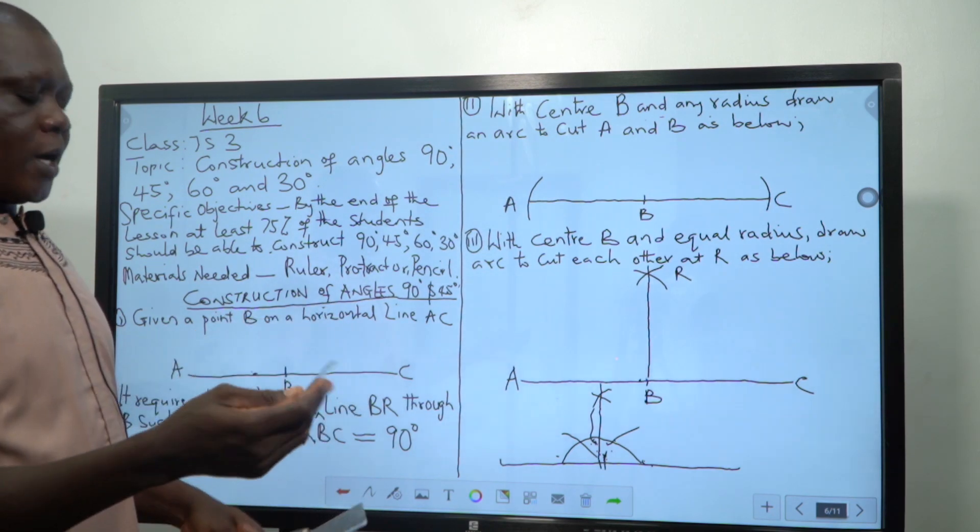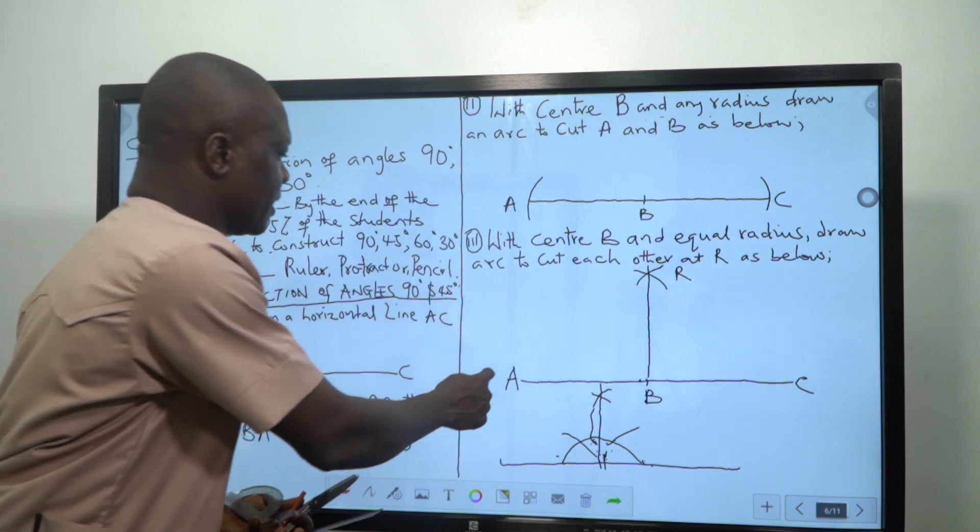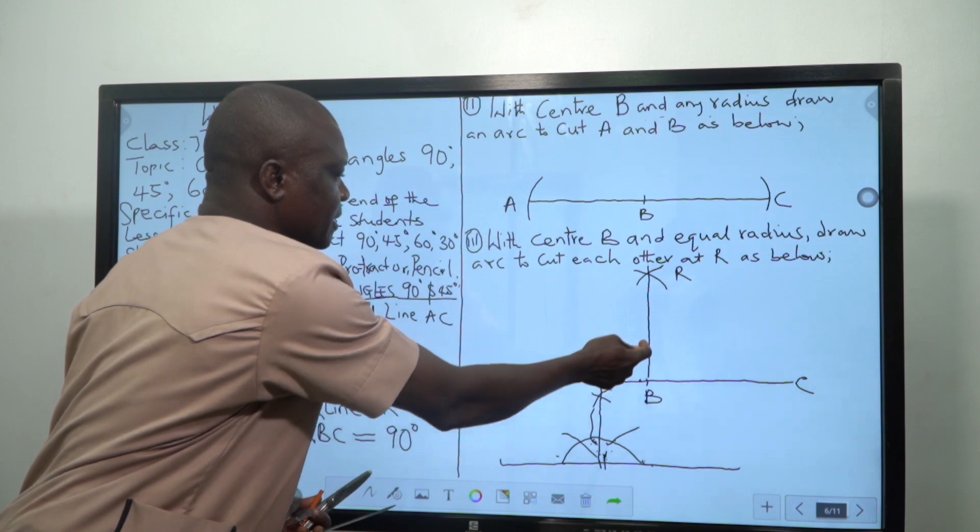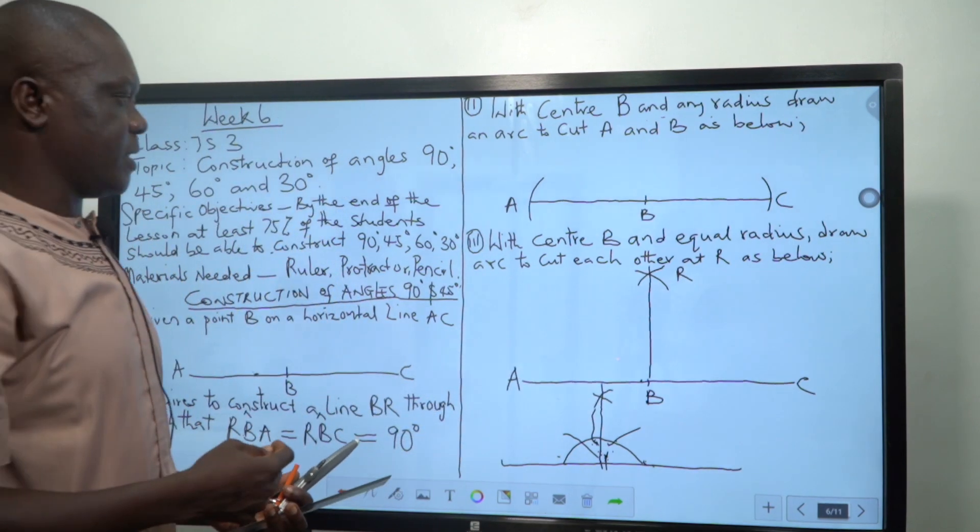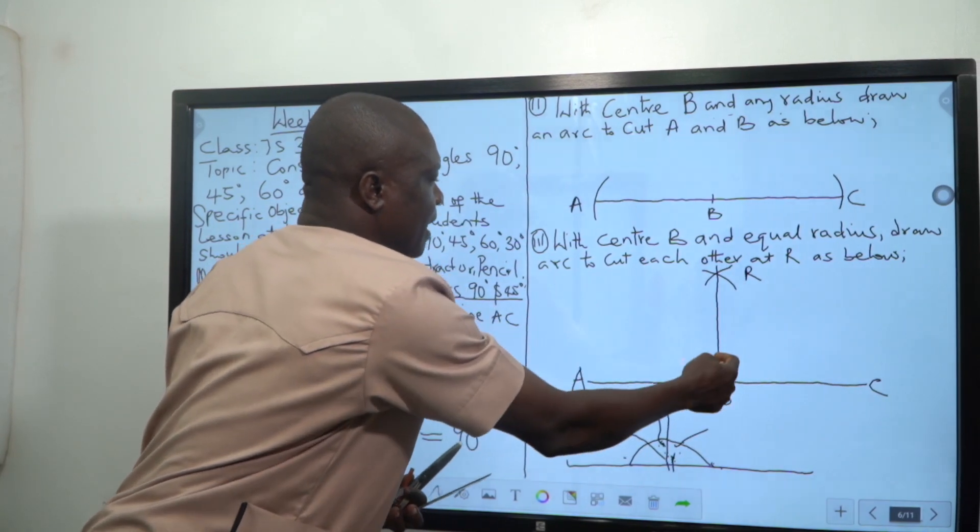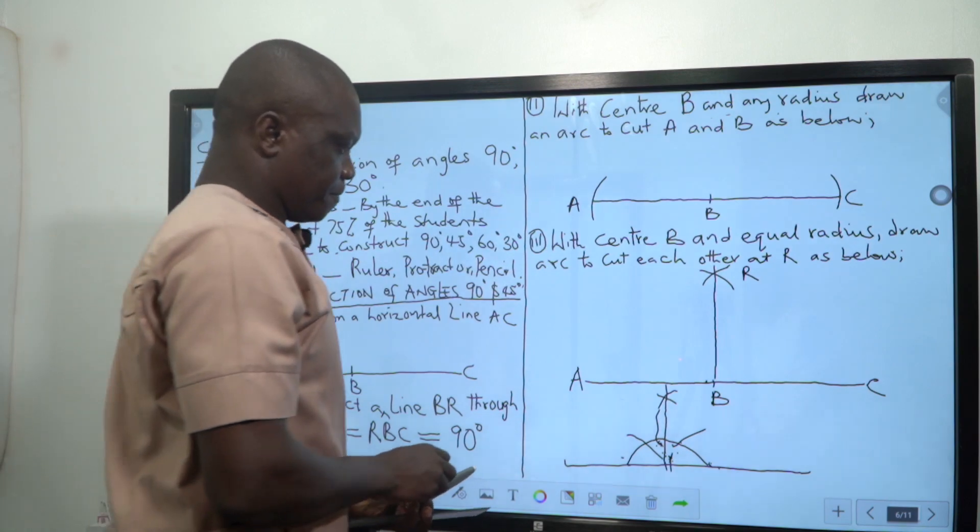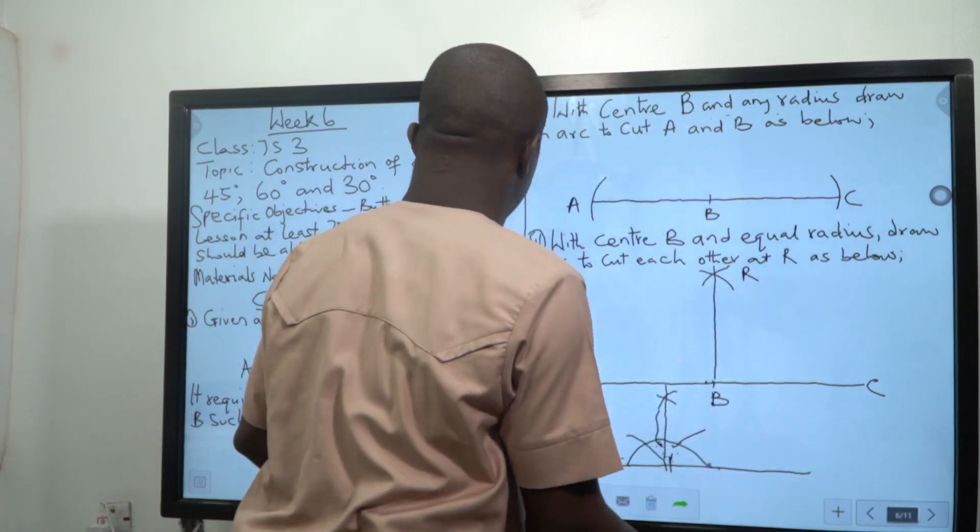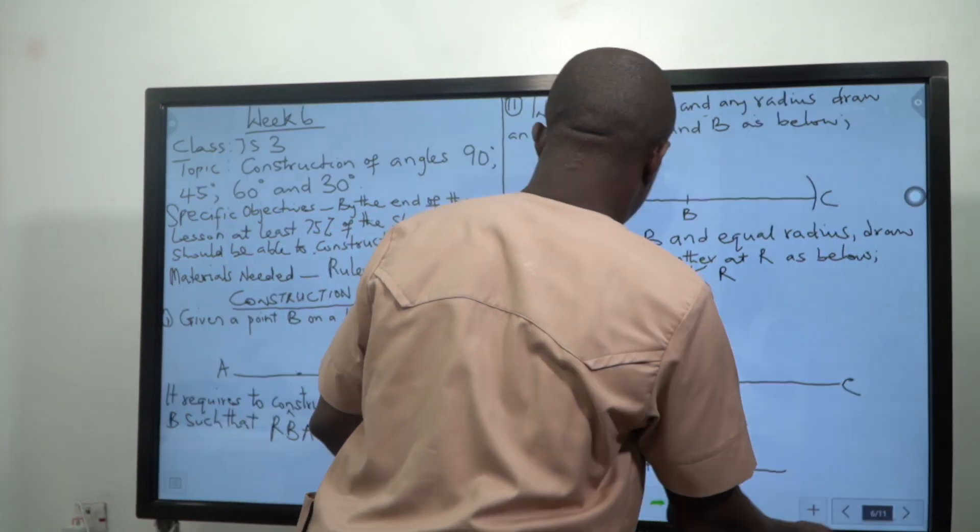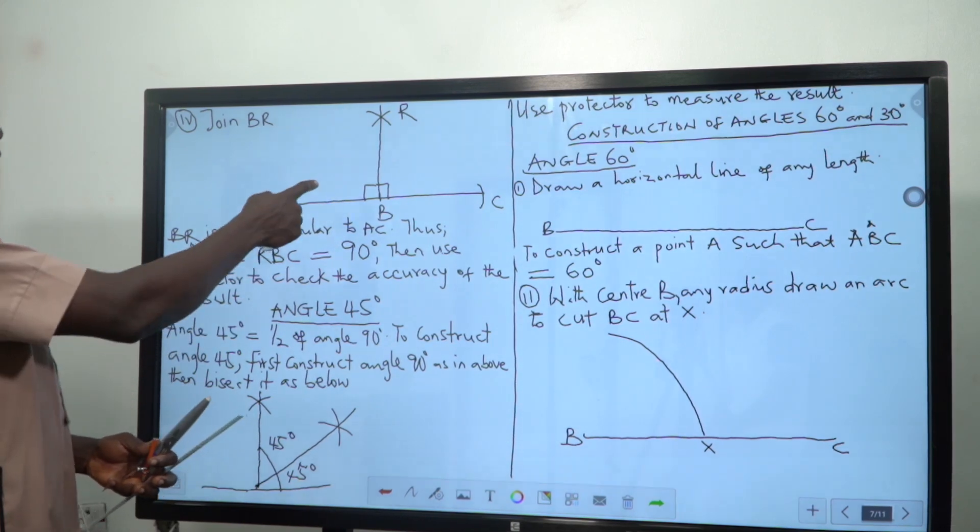Then if you want to know exactly whether what you have constructed, that is to say A B R, that is the angle that is here, makes angle 90 or C B R angle that is here is also 90 degrees.